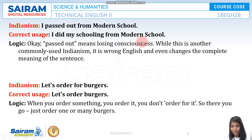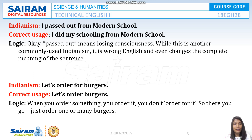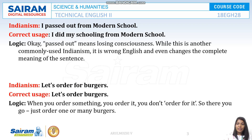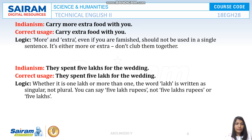'I passed out from Modern School' is wrong. 'Passed out' means loss of consciousness. The correct forms are: 'I did my schooling at Modern School,' 'I finished my schooling at Modern School,' or 'I completed my schooling at Modern School.' Also, 'let's order for burgers' is incorrect — the right phrase is 'let's order burgers.' There is no preposition after 'order.'